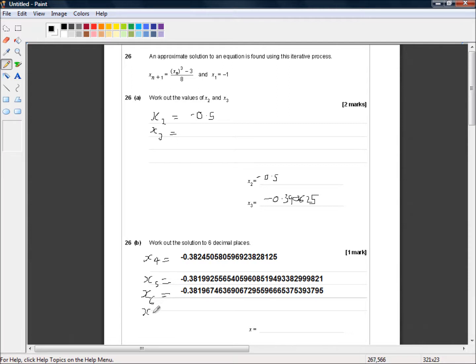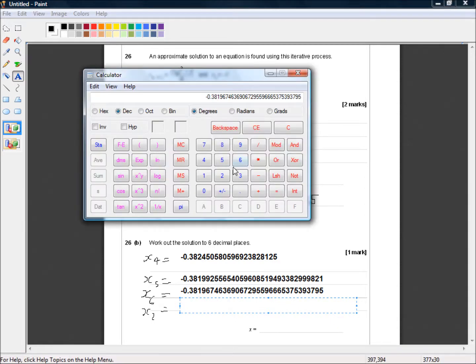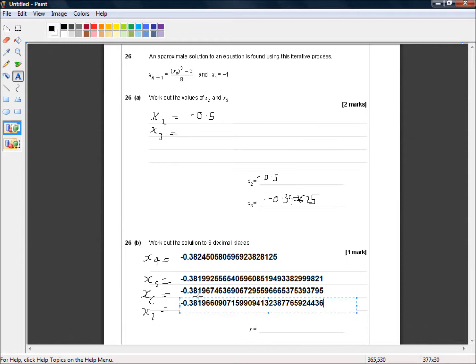x7. And here we go. Calculator. So cubed minus 3 divided by 8. Okay. And copy and paste. That's 967. That's 966. So that's accurate to five decimal places. So I'm hopeful that this might be the last time. x8 is equal to...